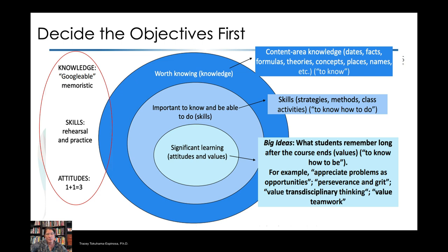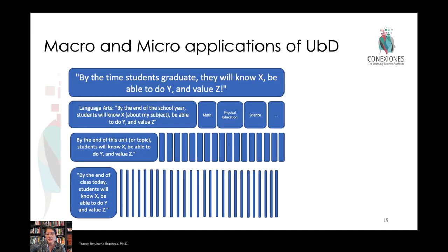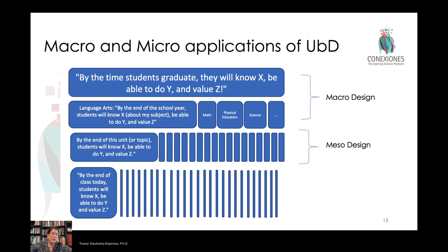Knowledge includes dates, facts, formulas, and conceptual understanding. Skills are your ability to apply the knowledge. Attitudinal things have a lot to do with values — valuing teamwork, hard work, or resiliency. So everything we teach can be categorized as knowledge, skills, and/or attitudes. Understanding by Design — the structure of objectives, evaluation, and activities — can be used at all levels, from macro planning at the national or state level, down to this particular course or even the particular class you're teaching today.